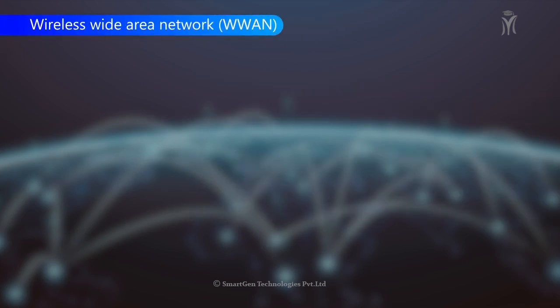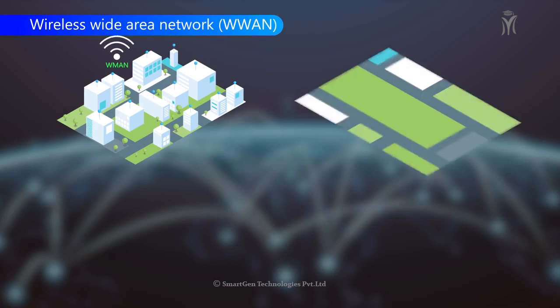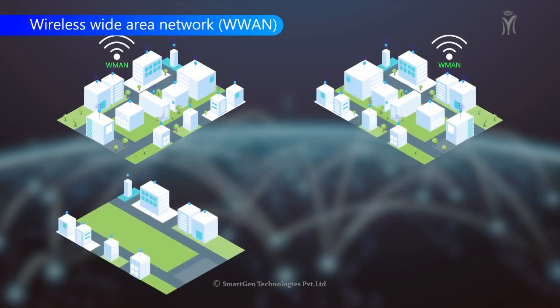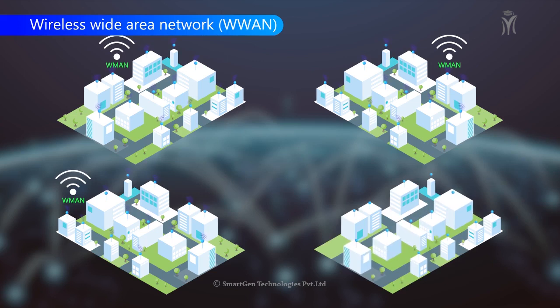Wireless Wide Area Network (WWAN) is used to cover large areas like towns and cities. It usually uses point-to-point microwave links. Advantages include efficiency, security, and quality.